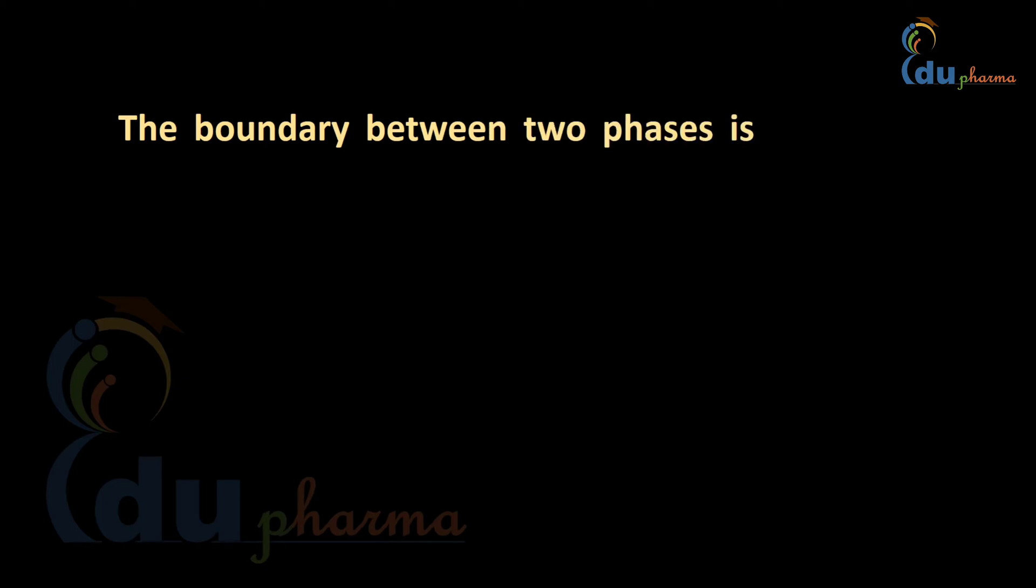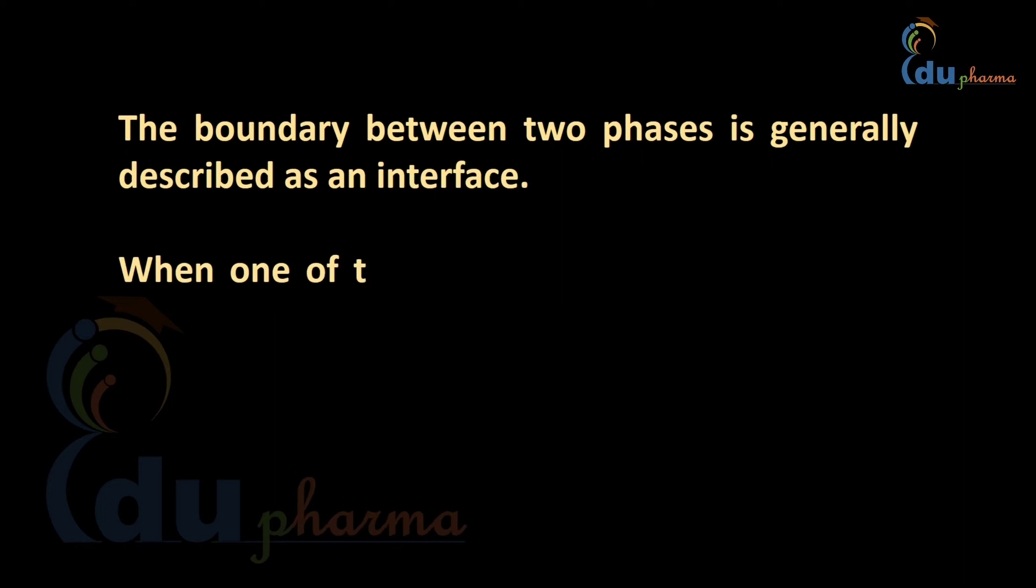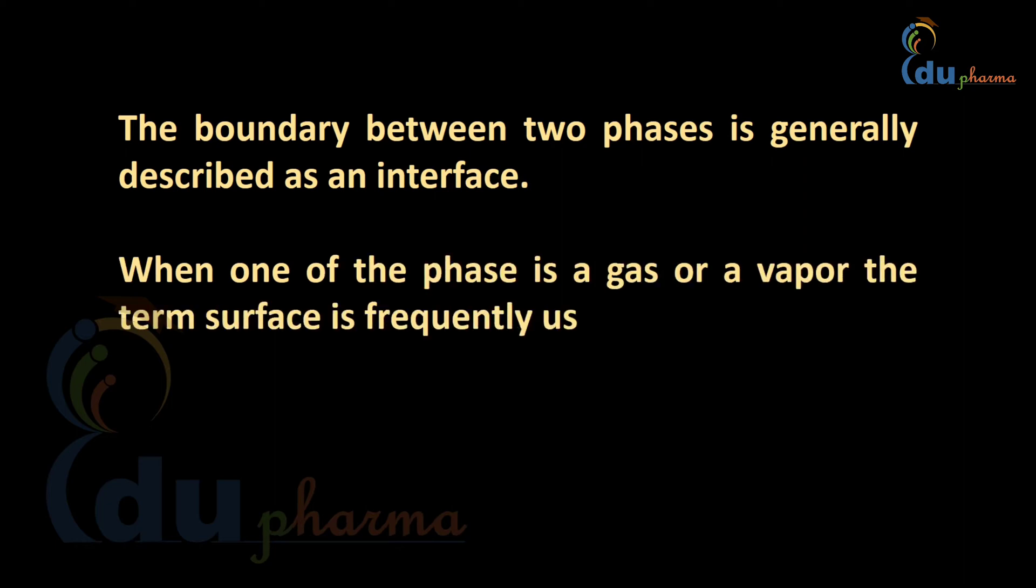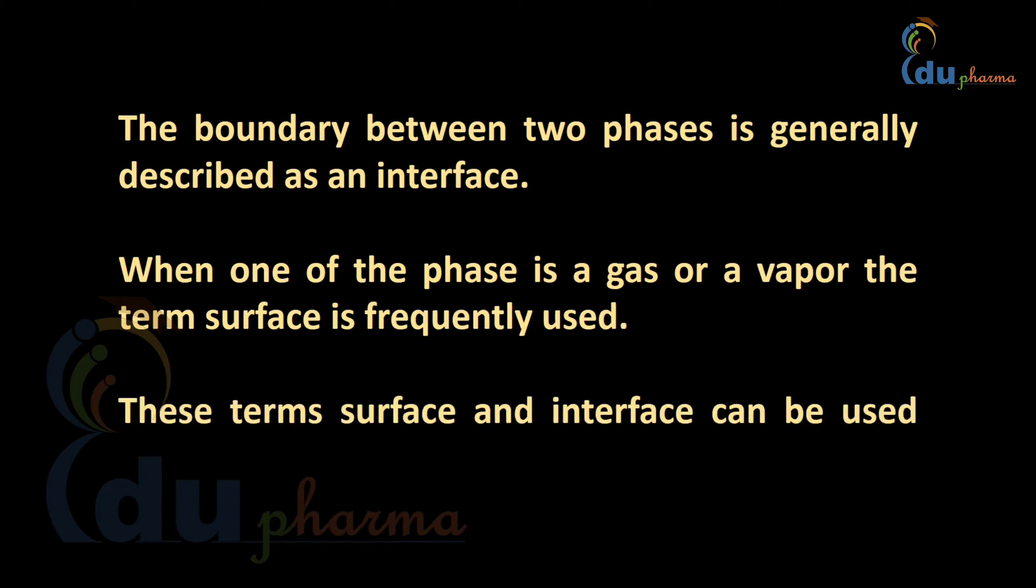The boundary between two phases is generally described as an interface. When one of these phases is gas or a vapor, the term surface is frequently used. These terms, surface and interface, can be used interchangeably in some cases.